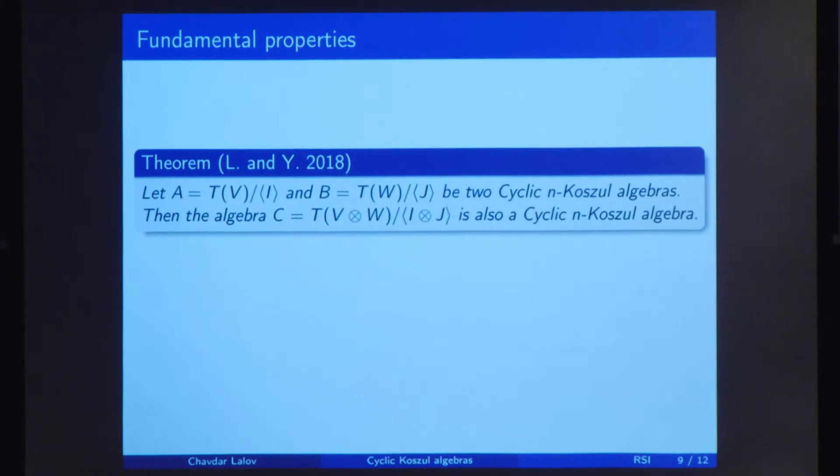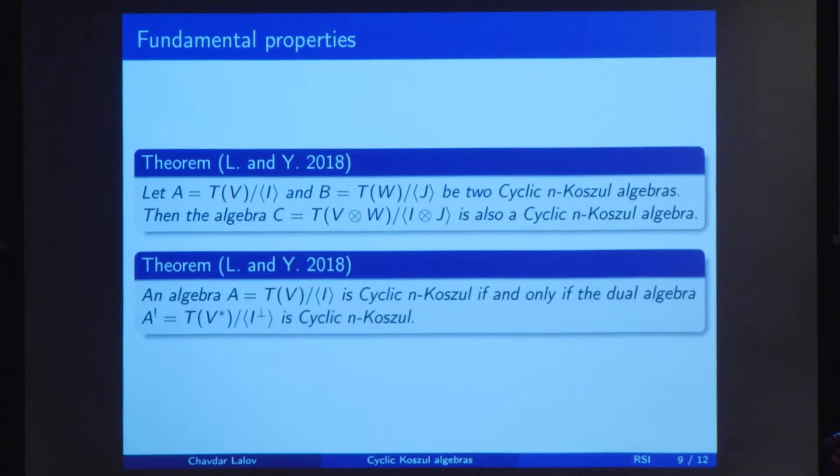In our project, we wanted to compare these two structures. And what we started with was to prove standard fundamental properties. Firstly, we proved that if A and B are cyclic n-Kozul algebras, then by combining them through the use of tensor product and making one bigger algebra, it is also cyclic n-Kozul. This is something which is also common for Kozul algebras. And the next thing we did was to prove that if we have an algebra and we take its dual, so we take the dual space here and the orthogonal complement of I, then TV star I orthogonal is also cyclic n-Kozul.